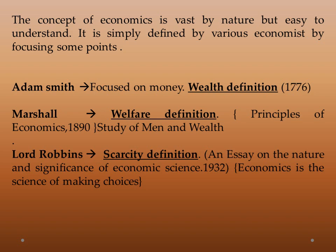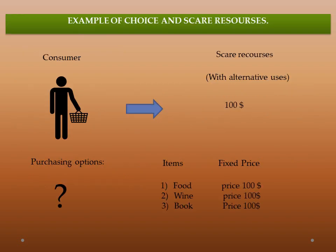Lord Robbins came and focused on the scarcity definition in his book An Essay on the Nature and Significance of Economic Science in 1932. He says economics is the science of making choices. Now we will see an example of choice and scarce resources.